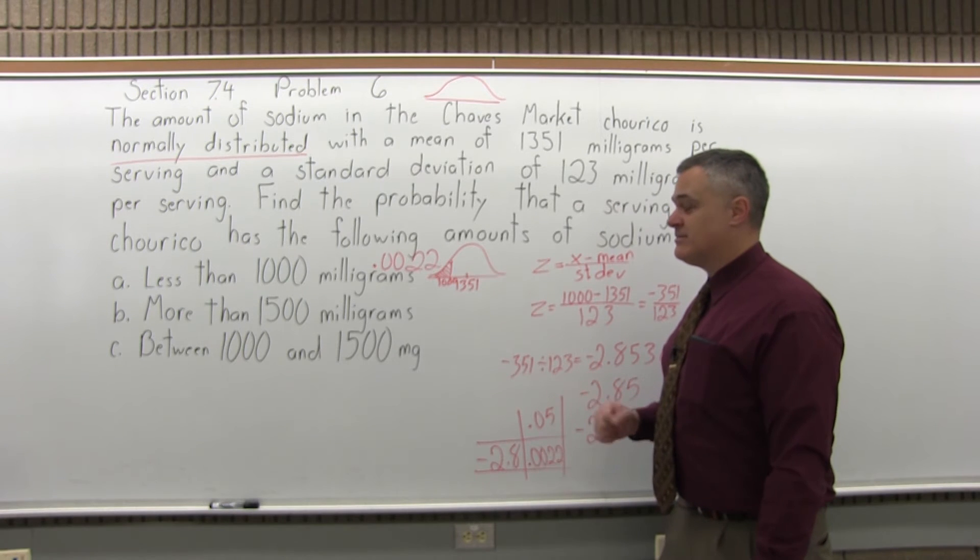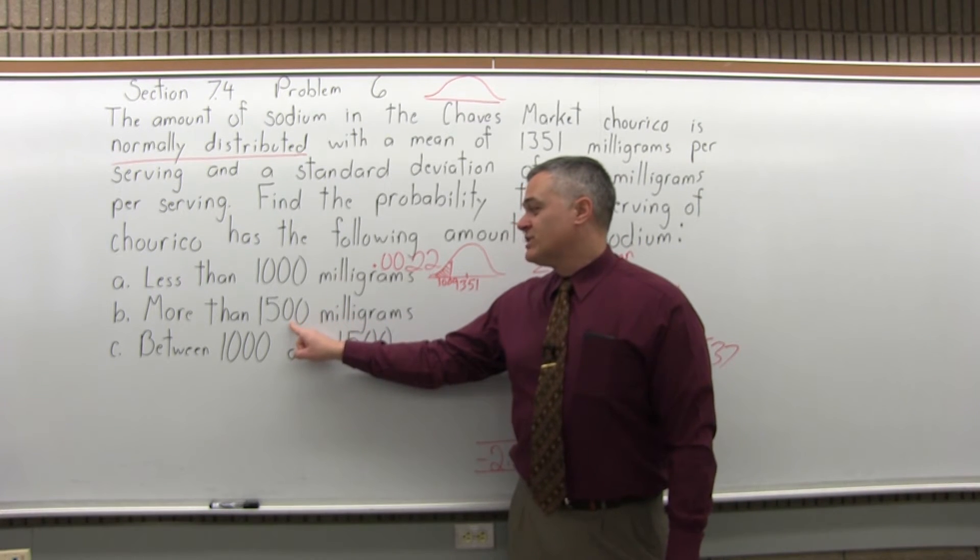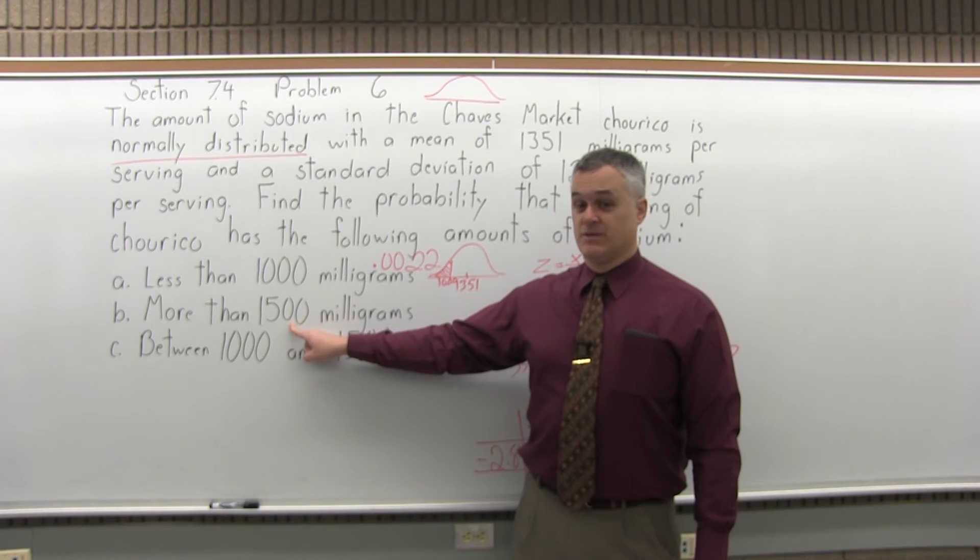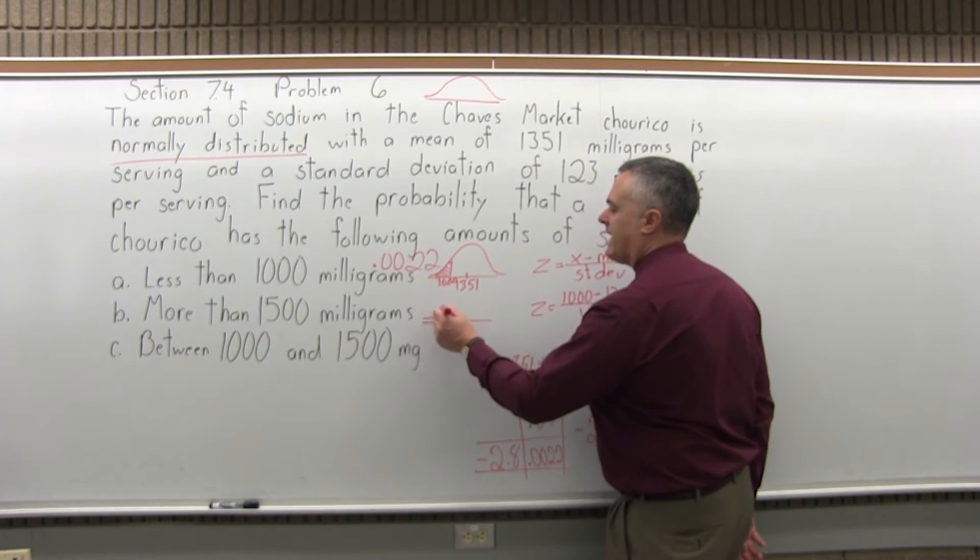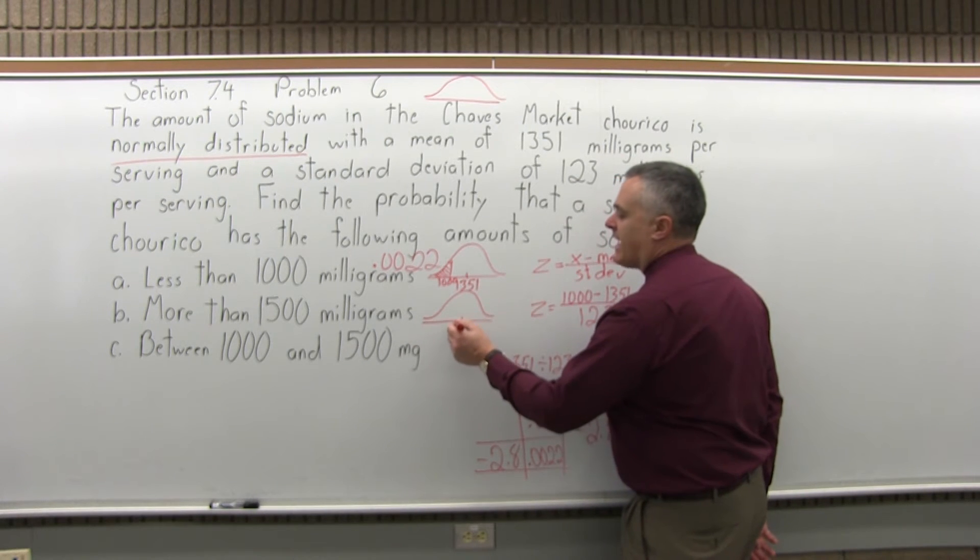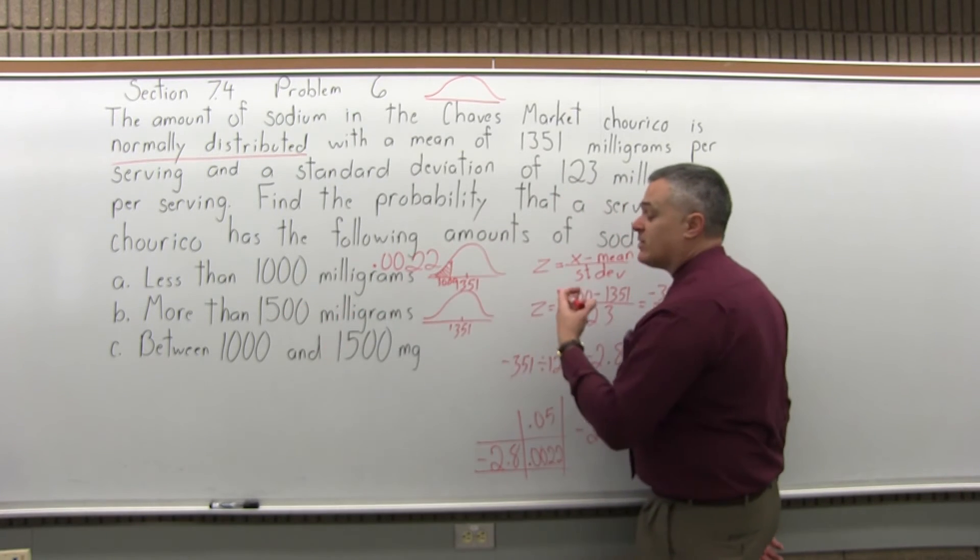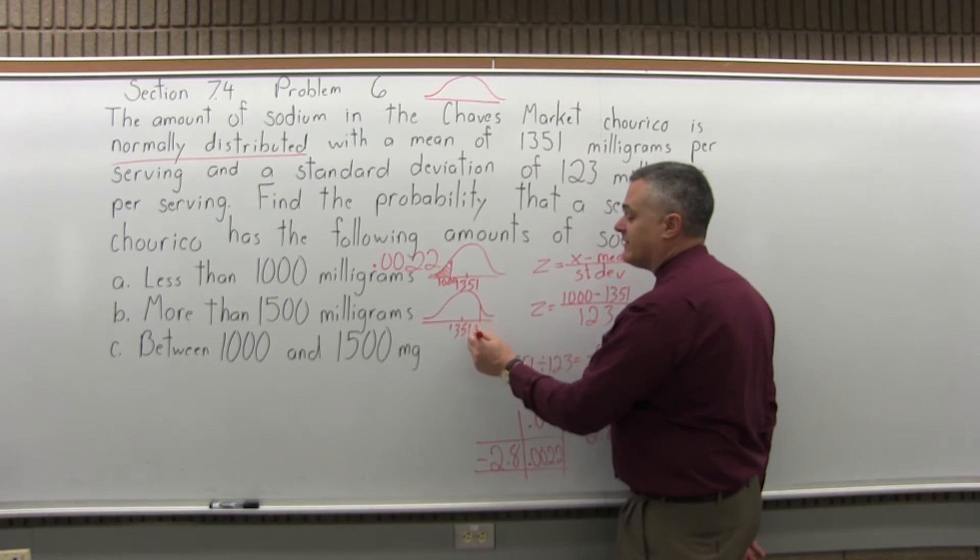Part B: What's the probability that one serving of Charves will have more than 1,500 milligrams of sodium? We have our bell curve. The average value is in the middle, 1,351. Now 1,500 is a little bigger than 1,351, so it's going to come after or to the right of it.